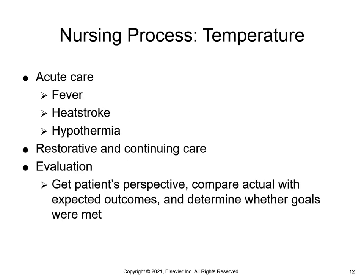When an elevated body temperature develops, the nurse will initiate interventions to treat fever. The objective of therapy is to increase heat loss, reduce heat production, and prevent complications. A heat stroke is an emergency situation. First aid treatment includes moving the patient to a cooler environment, removing excess body clothing, placing cool wet towels over the skin, and using oscillating fans to increase convective heat loss. Hypothermia treatment prioritizes preventing further decrease in body temperature.